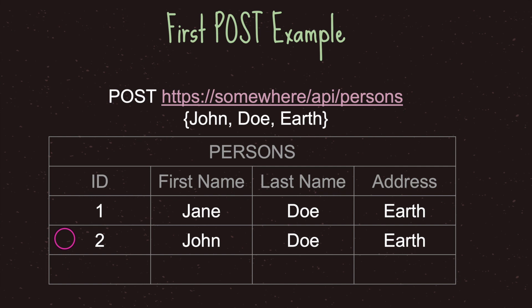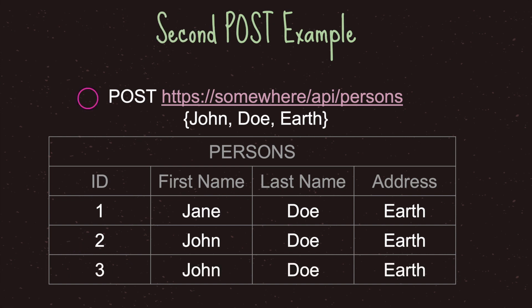One thing to note is that the POST method expects the server to create the identification number for you — that's why our POST method does not contain an ID number. The server creates the identification number for the client. So we have a second row: first name John, last name Doe, address Earth, followed by an identification number of 2 created by the server. And if we use the POST method again with the same exact information, the server will create another identification number for that resource — resulting in a third row with the same exact information.